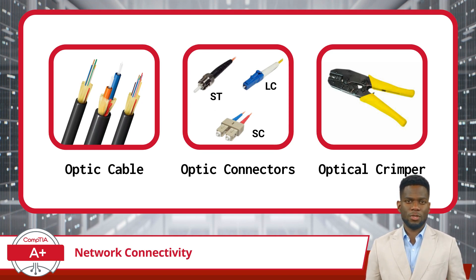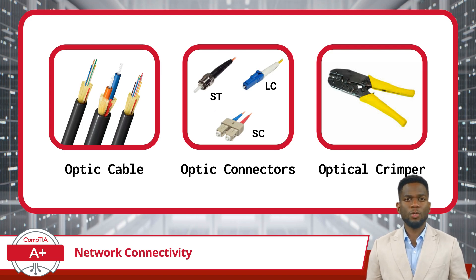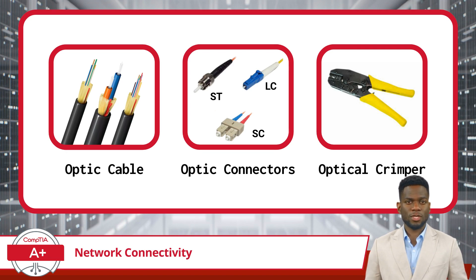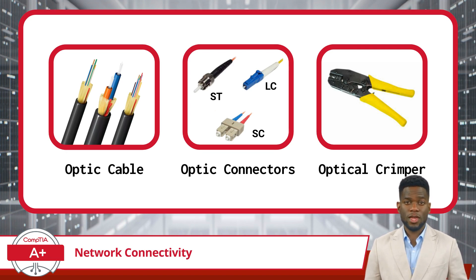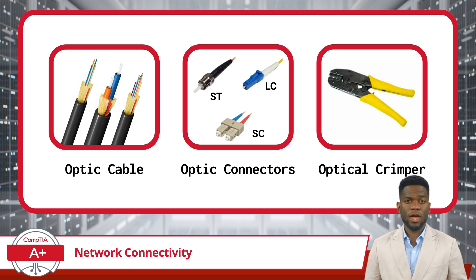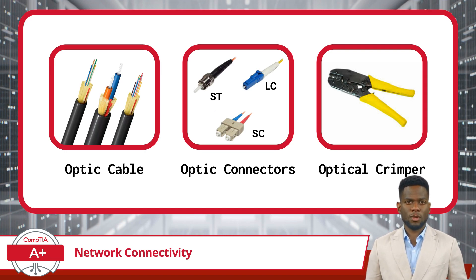In addition to these connectors, fiber-optic cables often require the use of an optical crimper for proper termination. The optical crimper is a specialized tool used to attach ST, LC, and SC connectors to fiber-optic cables securely. With that last bit of knowledge grasped, you should now be ready to handle any PBQs about network connectivity.